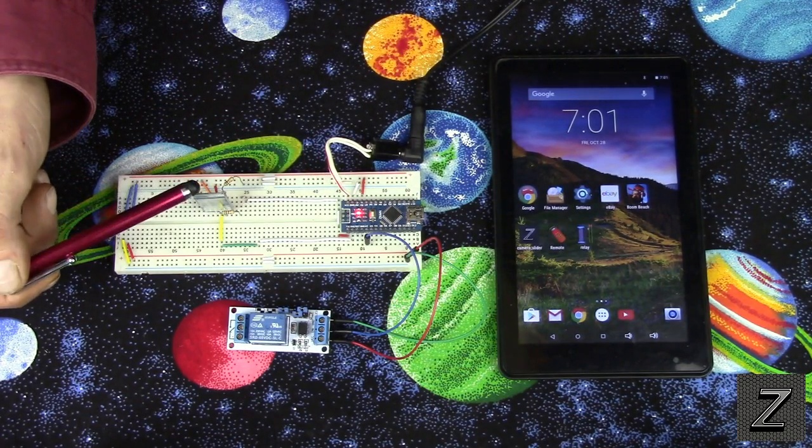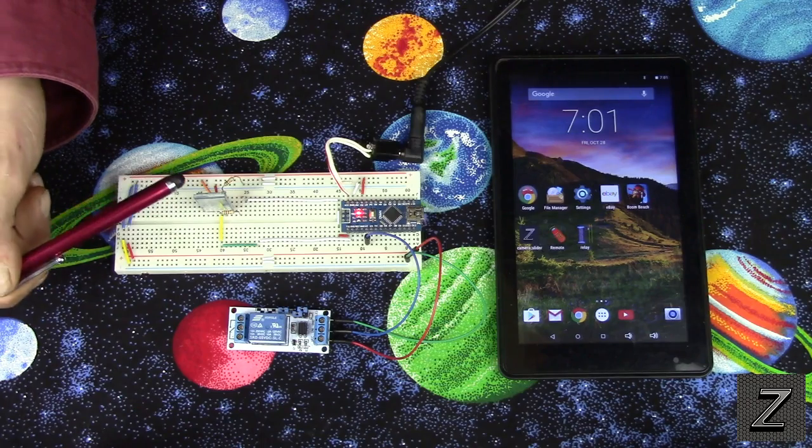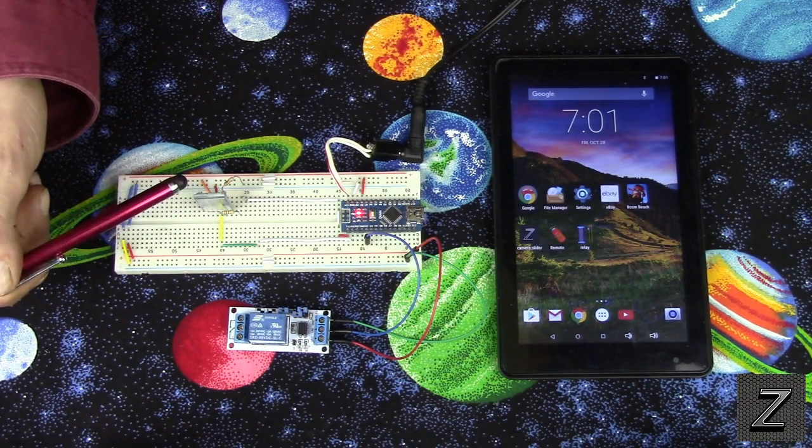Now for the Bluetooth module, the transceiver, I'm using an HC-06. You can use an HC-05, that'll work fine. Just make sure it's programmed in slave mode.